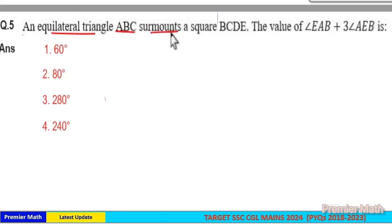An equilateral triangle ABC surmounts a square BCDE. The value of angle EAB plus three times angle AEB is: